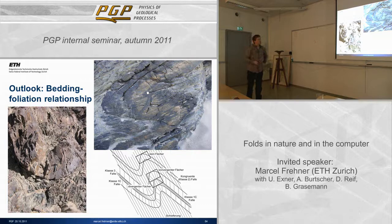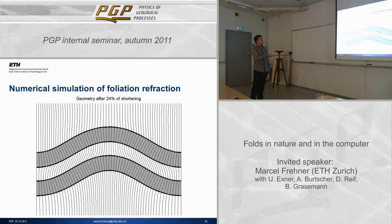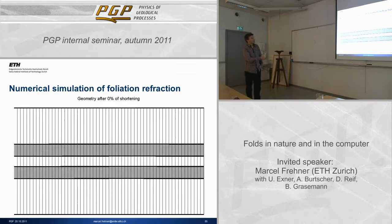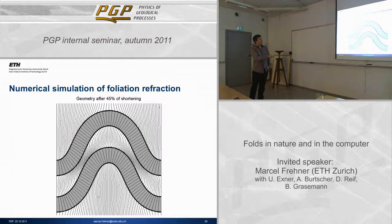A very first simple simulation shows passive marker lines that are initially vertical and then passively deformed. Already in this simulation, you get something very similar to nature: you get this fan in the stiffer high-viscosity layer, and you get the opposite fan-like pattern in the outer region, which can also be observed in nature.